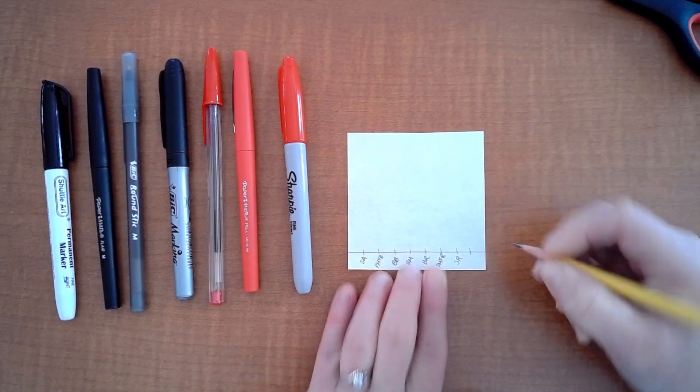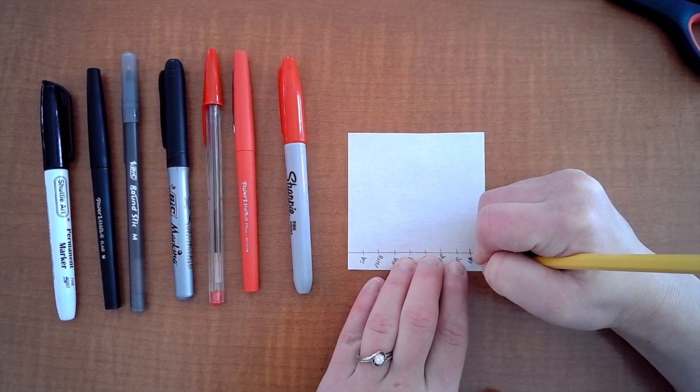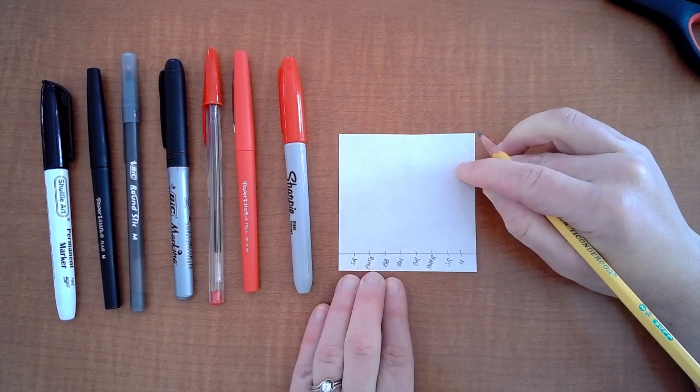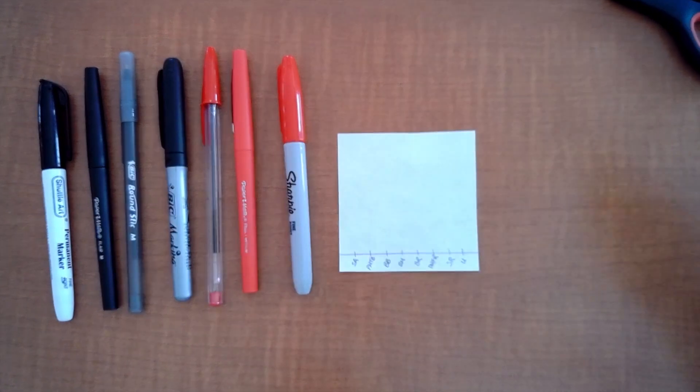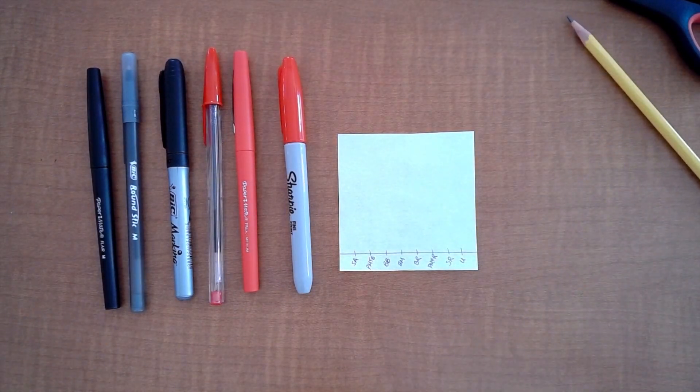And then moving on we have Bic red pen which is BR and then we have Paper Mate Flair red PMFR and then we have the Sharpie red which is SR and then the last one I'm going to put a U there for unknown. So in class if I were doing this I would go to another group for this one. So right now I'm going to mark up all the ones on my sheet.